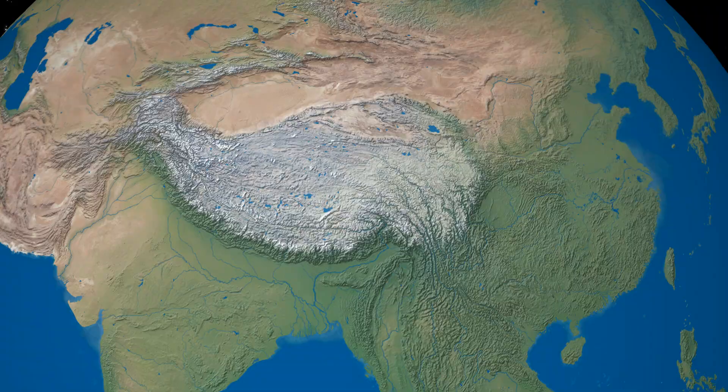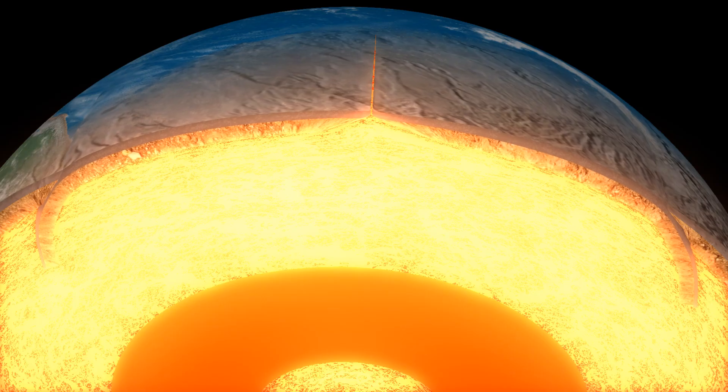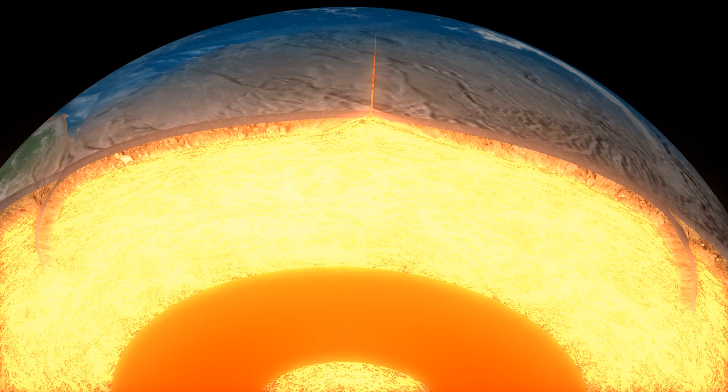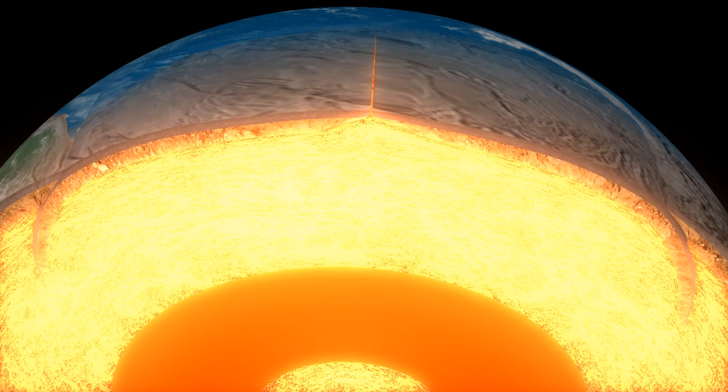When two continents run into each other, mountains are forced up. Constant upwelling of rock at divergent boundaries and sinking of rock at convergent boundaries creates a conveyor belt effect that is the main driving force of plate movement.